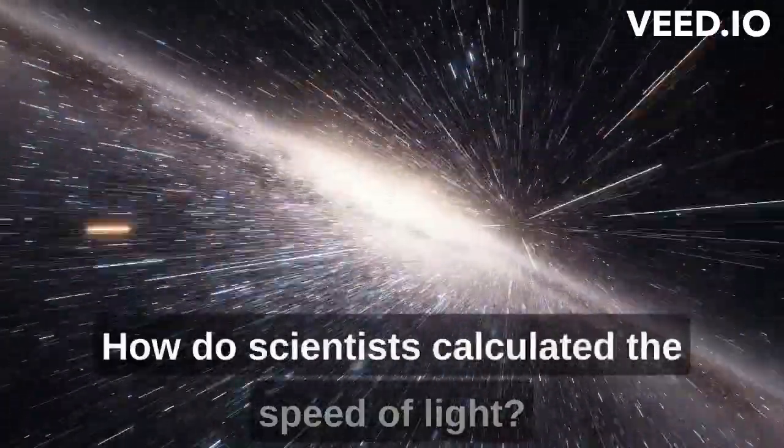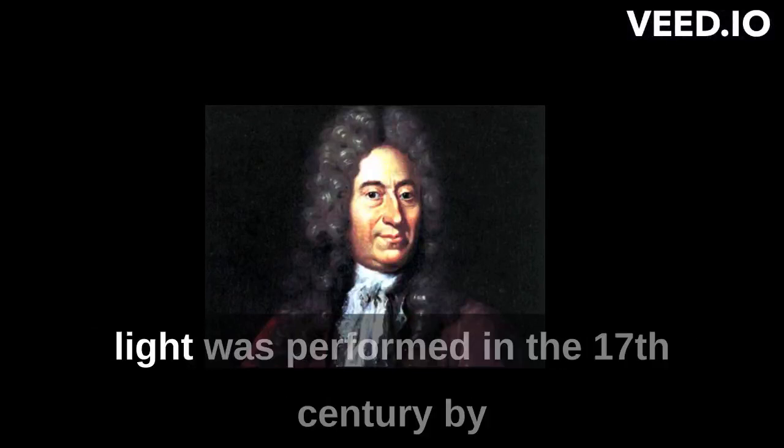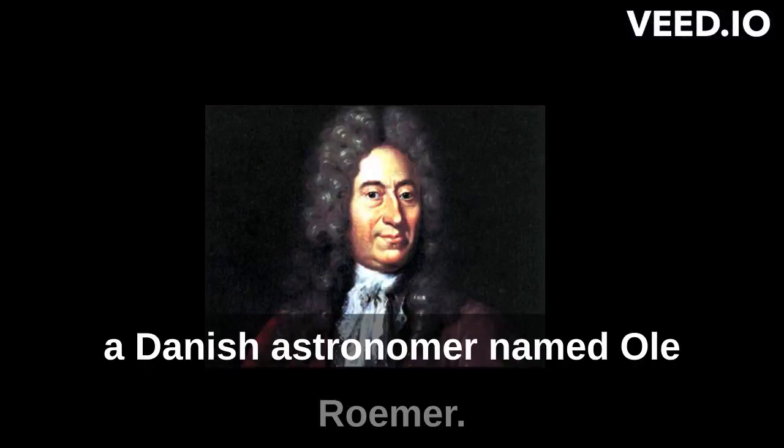How do scientists calculate the speed of light? The first successful measurement of the speed of light was performed in the 17th century by a Danish astronomer named Ole Roemer.